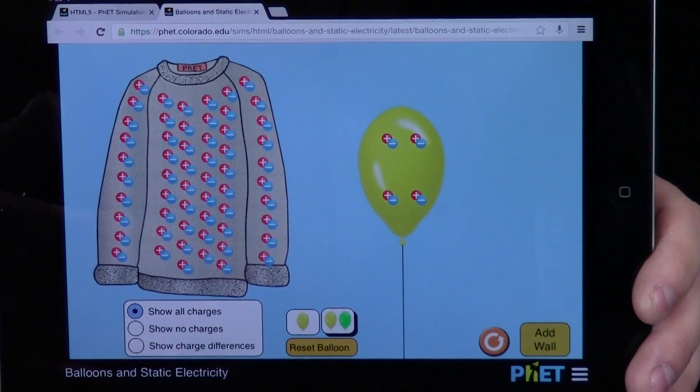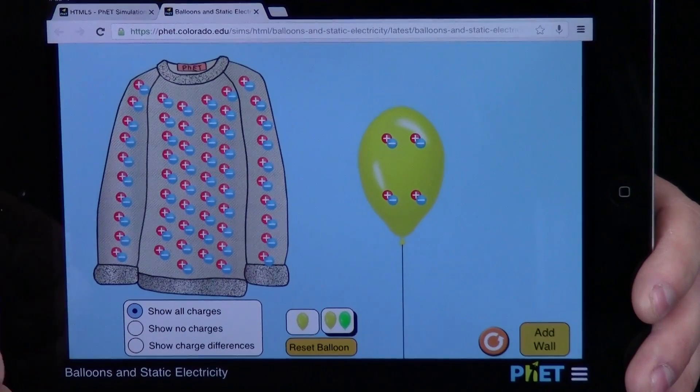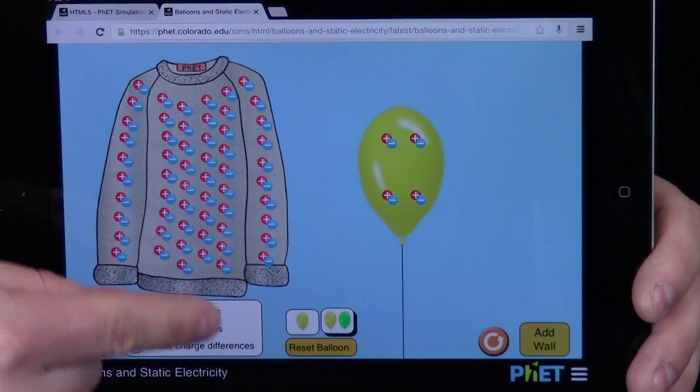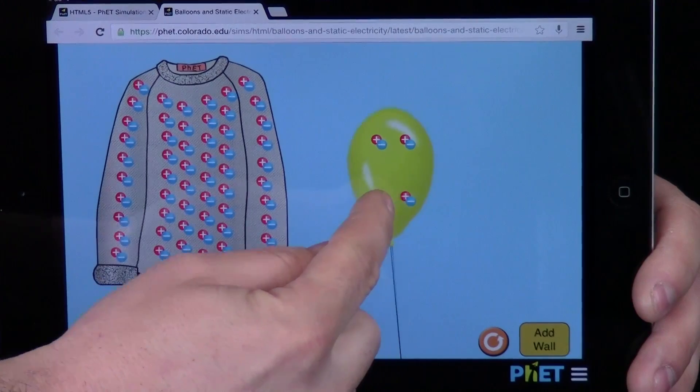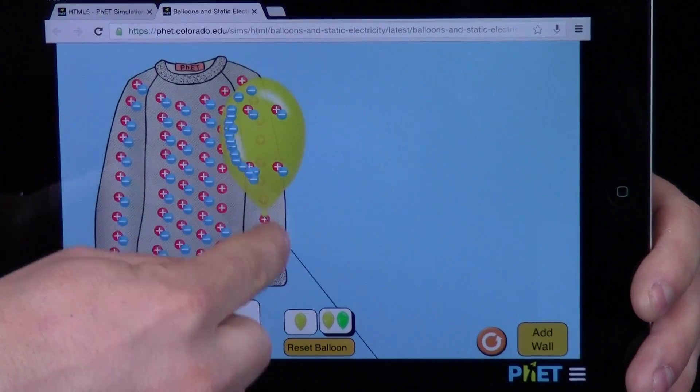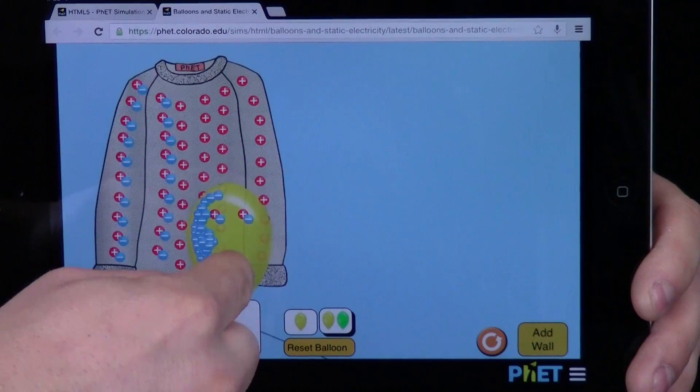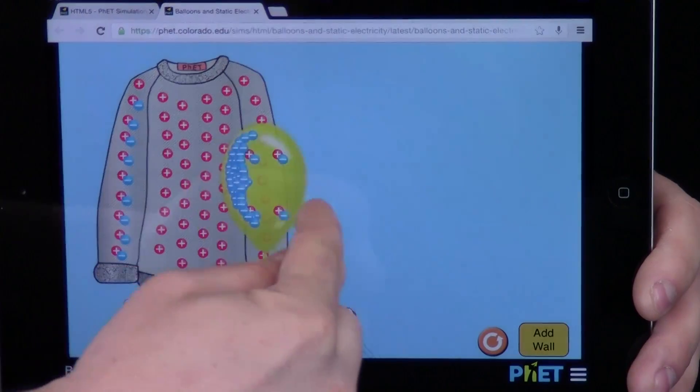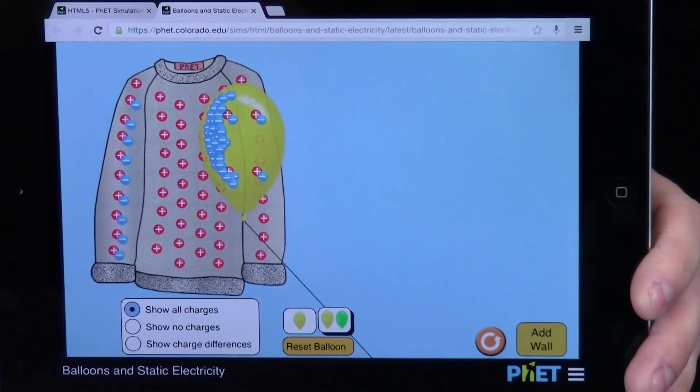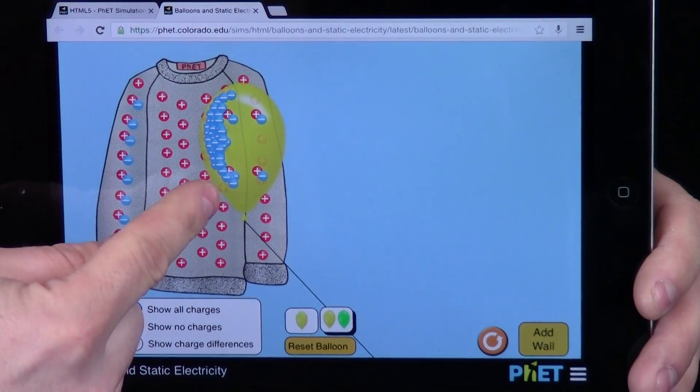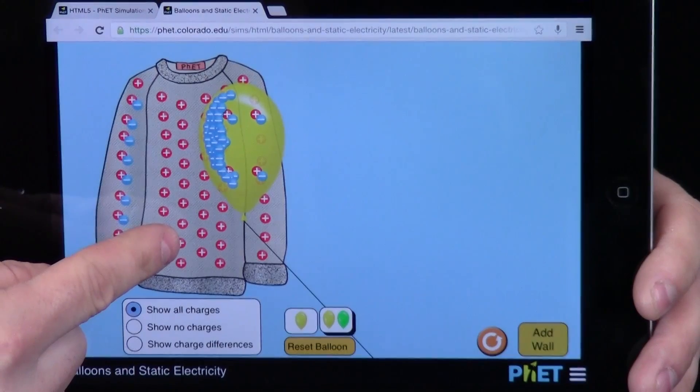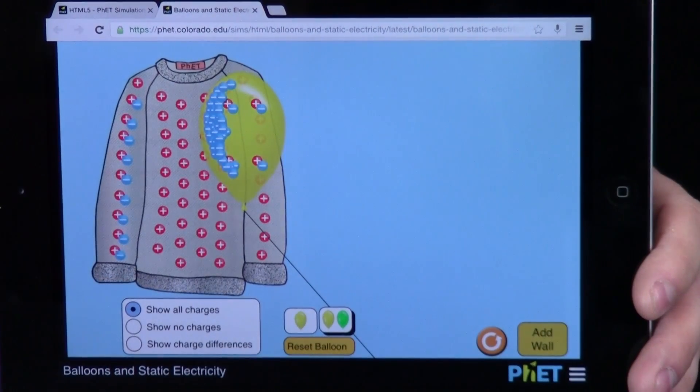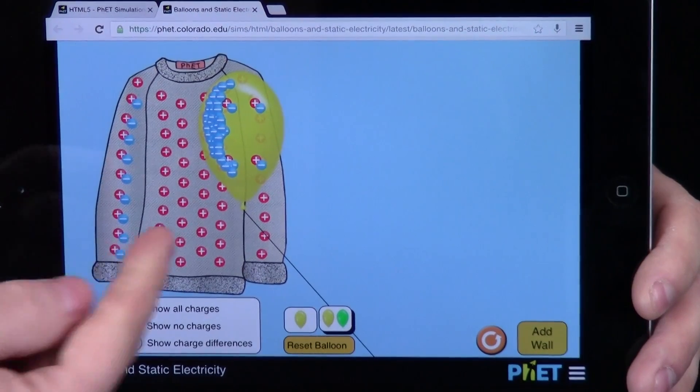Through science, we've discovered that some types of matter lose those negative charges easily. Watch what happens to the negative charges on our sweater as I rub the balloon over it. Wow, the balloon is picking up those negative charges off of the sweater. Watch what happens when I pull it away. All those negative charges are attracted to all those positive charges left on the sweater. Opposite charges attract. I can see it.